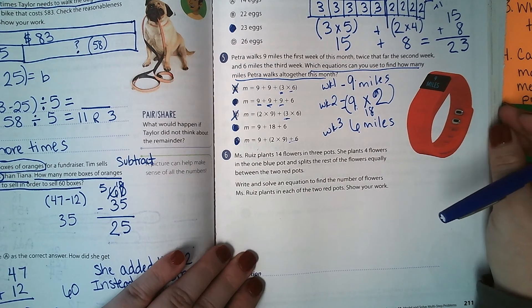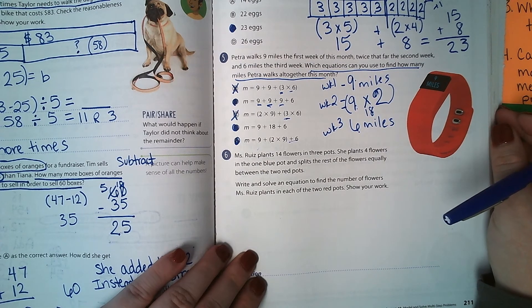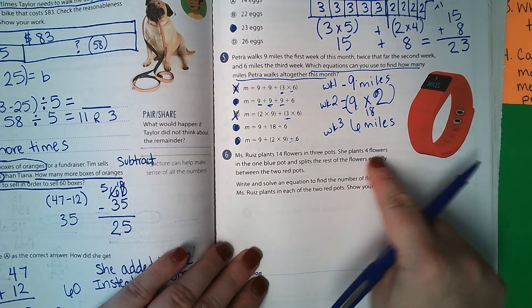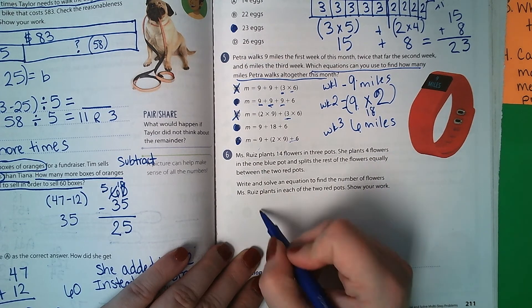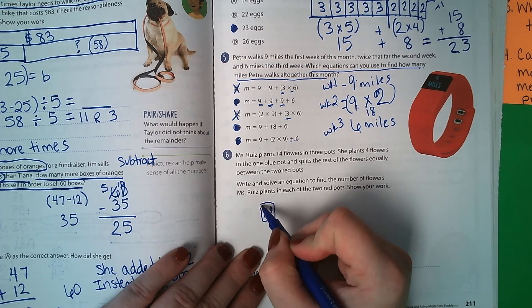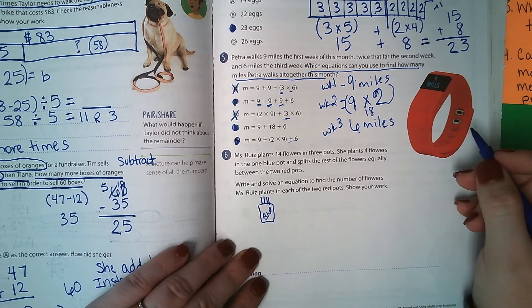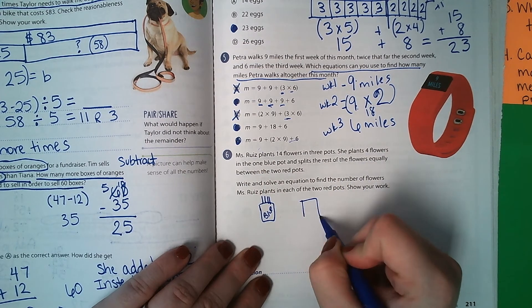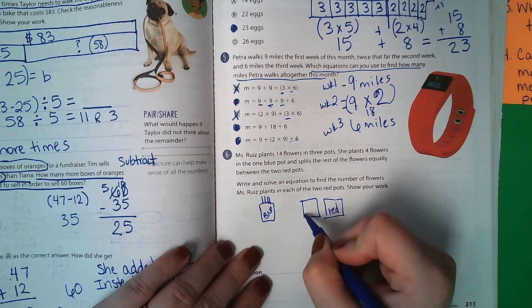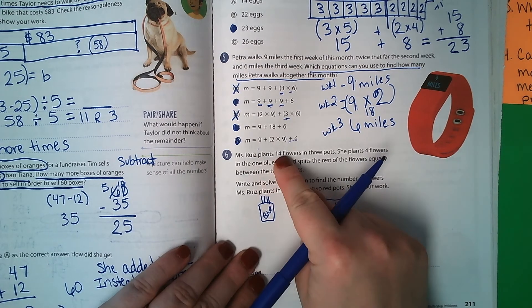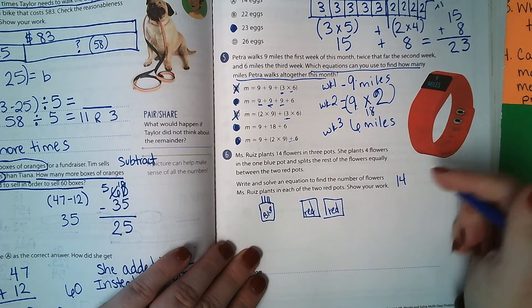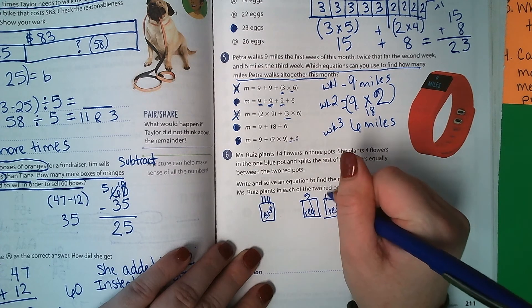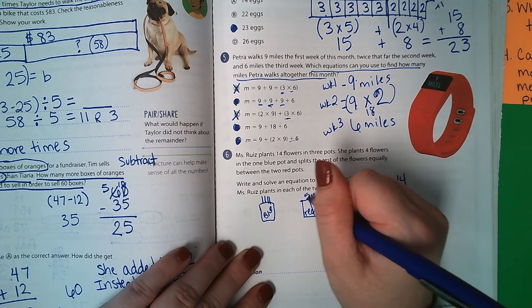Number 6. Miss Ruiz plants 14 flowers in 3 pots. She plants 4 flowers in 1 blue pot. This is her blue pot. She plants 4 flowers. Then she splits the rest of the flowers equally between the 2 red pots. So this is 14, and we put 4 in here. That means each of these got 5.